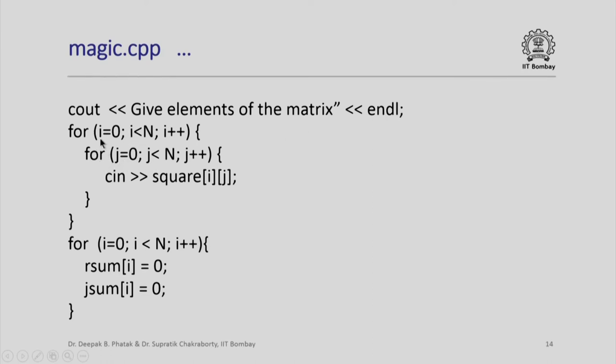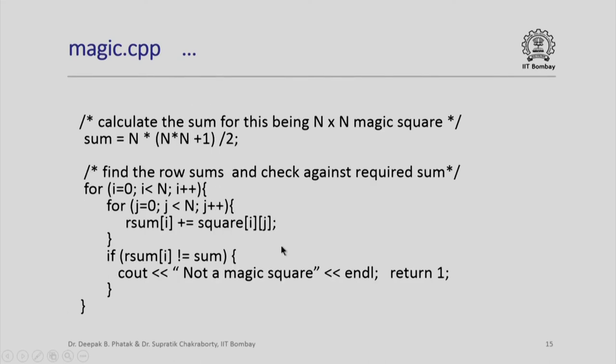I first read the value of n, next I read the values of all the elements of the matrix. So, I run a nested iteration for i equal to 0 to n minus 1 and j equal to 0 to n minus 1 and input values i comma jth element of the square. Having read this value, I now initialize my row sum and column sum arrays to 0. They must initially be 0 because I will be accumulating the values in the ith row and values in the jth column into these. I calculate the sum for this being n into n magic square. If this input square has to be n by n magic square then the sum must be equal to this.